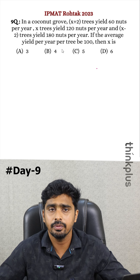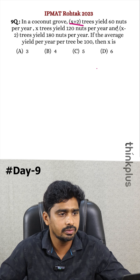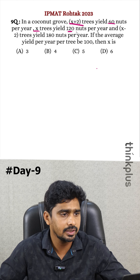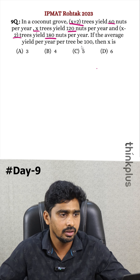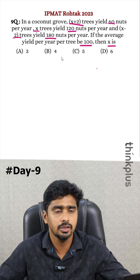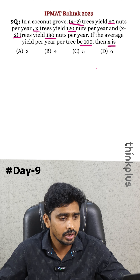This is an IPM 2023 question: in a coconut grove, x plus 2 trees yield 60 coconuts, x trees yield 120, and x minus 2 trees yield 180. The average yield is 100. What is the value of x?